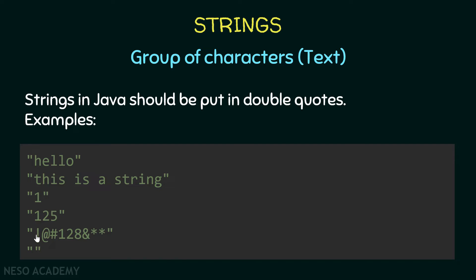We are putting characters between double quotes, so these are strings. All the characters you can see on your keyboard, whenever you put them between double quotes, they will be a string in Java. There is also an empty string — double quotes with nothing inside. In summary, a string is a group of characters put between double quotes.